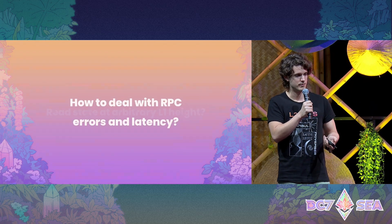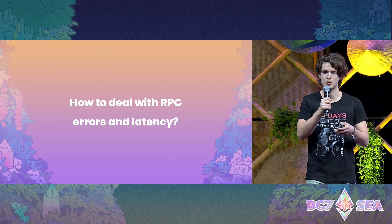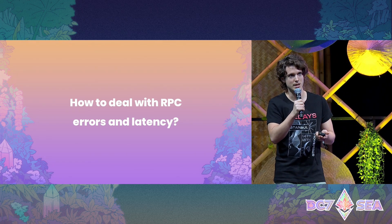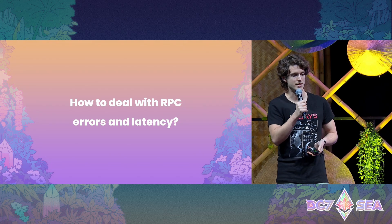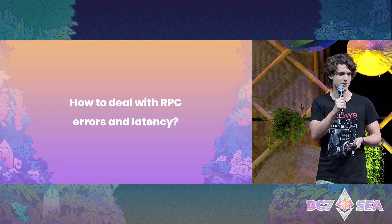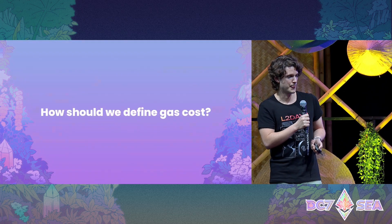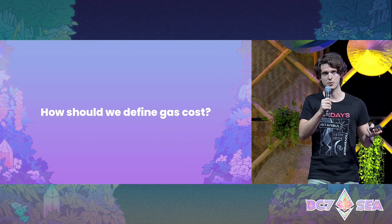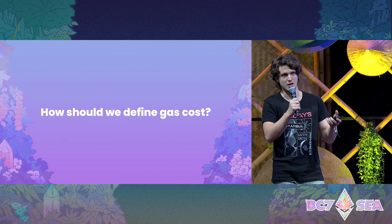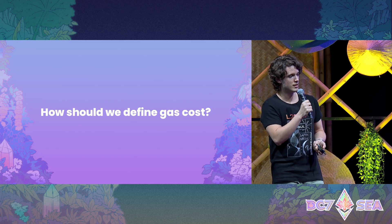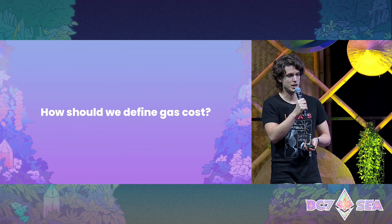Another question is how to deal with RPC errors and latency when executing calls to the L1SLOAD precompile. Latency is a big question mark because if there's latency between the L2 node and the L1 node, the RPC query might affect system throughput and slow things down. You need to factor this in when pricing the precompile, and decide whether to retry or drop a transaction on error. Defining the gas cost is also tricky. Our proposal has a fixed cost per precompile call plus a variable cost per number of slots queried, but you also have to pay for producing and verifying these MPT proofs, which requires benchmarking.